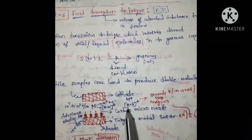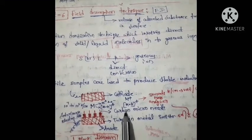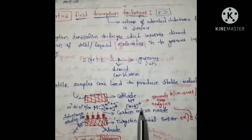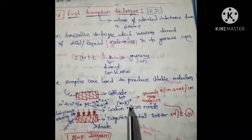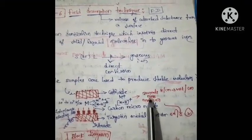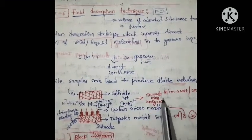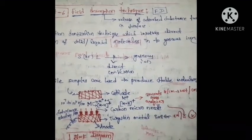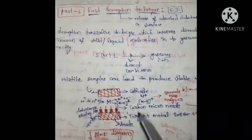This quasi molecular ion — to find the molecular weight, we add one to the molecular ion value. This is the quasi molecular ion, and it moves towards the mass analyzer. The mass analyzer is present in the tungsten metal emitter setup.